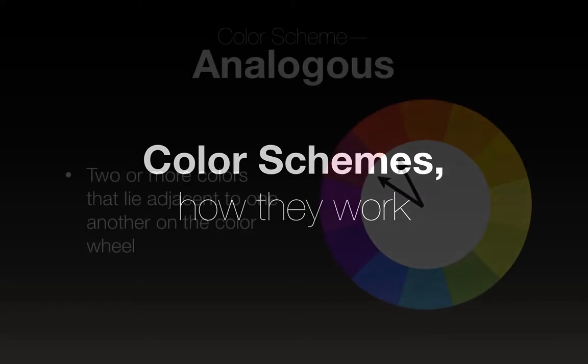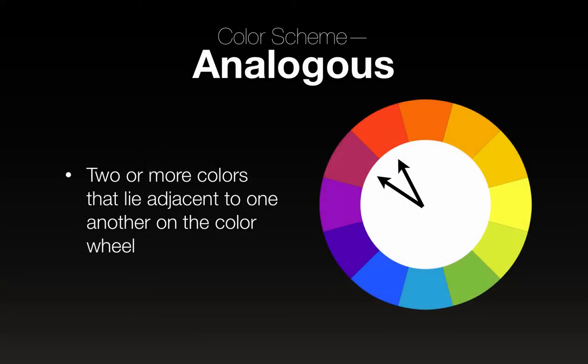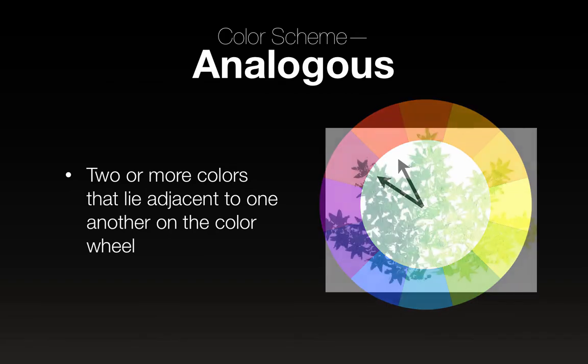Color schemes and how they work. An analogous color scheme is two or more colors that lie adjacent to one another on the color wheel — any couple of colors that are close to one another on a color wheel, that's an analogous color scheme.